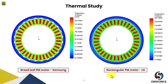We also performed a thermal study. You can see the temperature rise in both models due to the stator winding, which is the main source of heat generation. Since the excitation was the same, the temperature rise due to the coils is almost the same, which is around 129 degrees Celsius. This is well within the limit of its insulation class.